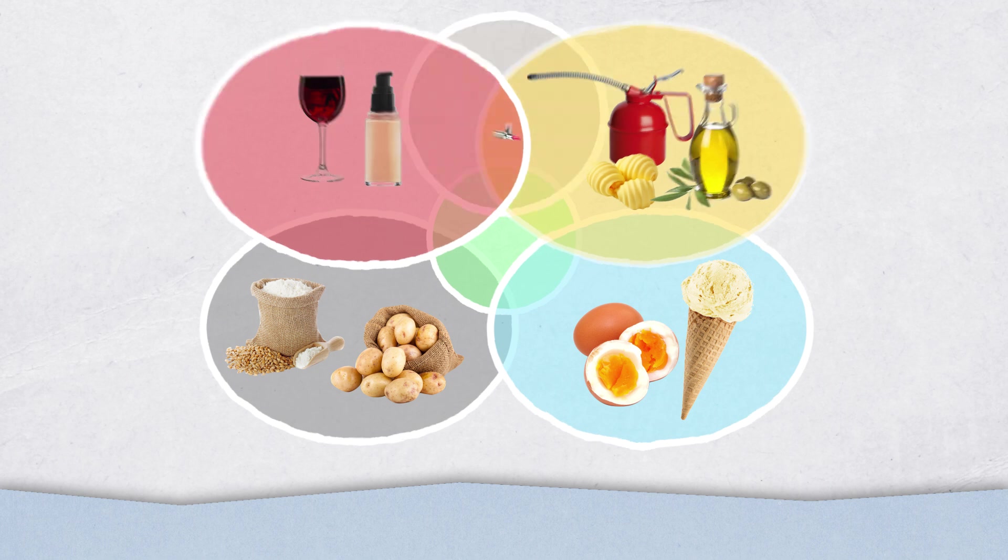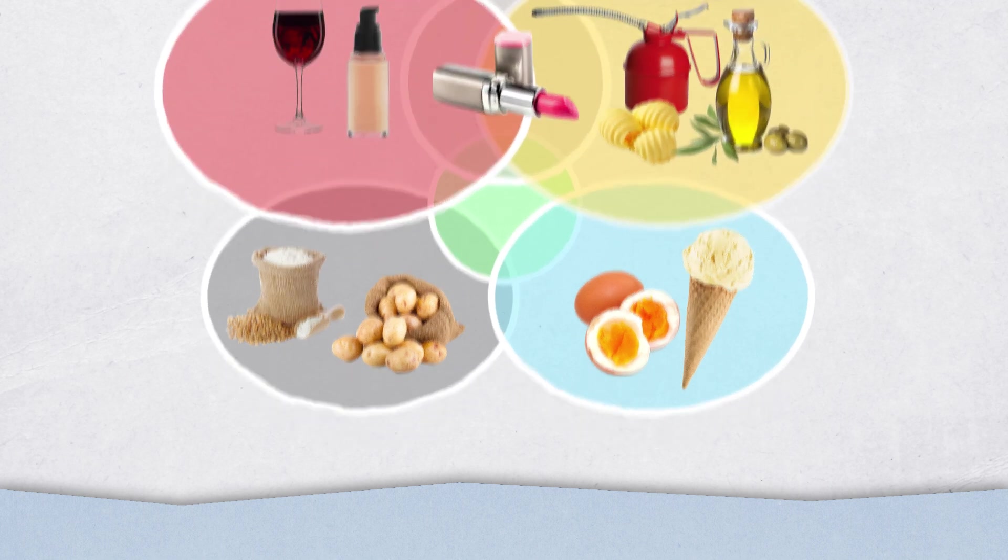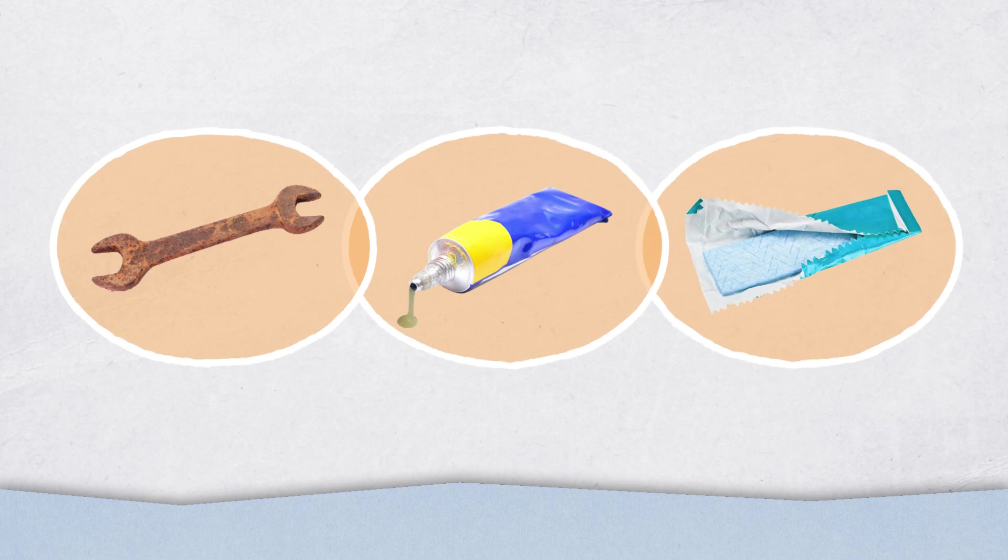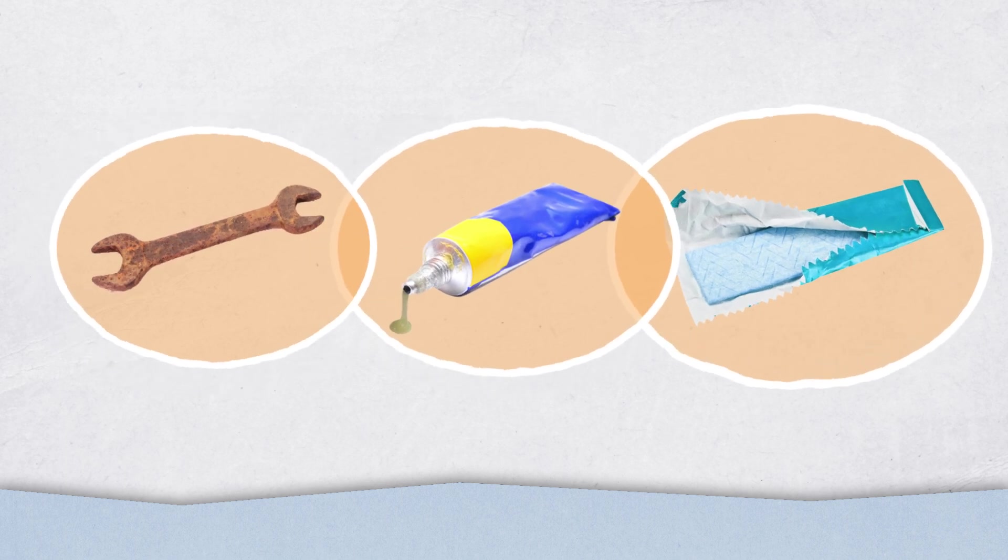For instance, lipstick, which is a combination of pigment and fat. Having said that, there are much more complex stains like rust, glue, and chewing gum.